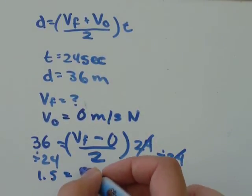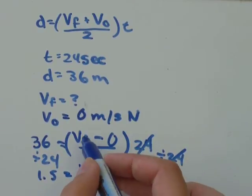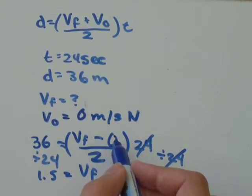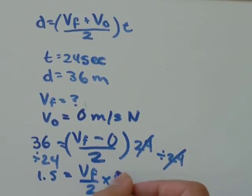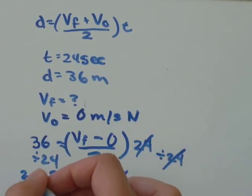And that equals VF. VF minus 0 is the same as just VF over 2. To solve for VF, I'm going to multiply by 2. So these 2's will cancel out. Do the same thing over here.